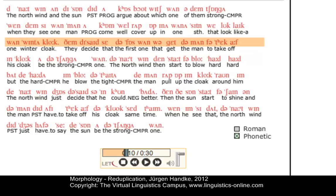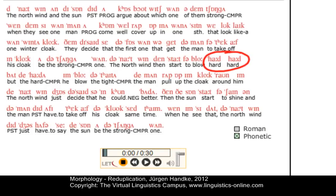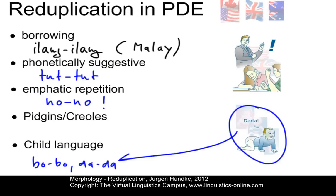This is the Jamaican Creole version of the story 'The North Wind and the Sun.' In the recording, you hear: 'And to take off in cloak at the Tranga one. The night wind then start to blow hard, hard. But the harder him blow, the tighter the man wrap up in cloak around him.' What you find here is 'hard, hard' — the north wind started to blow hard, hard — which is simply reduplication and means 'very hard'.